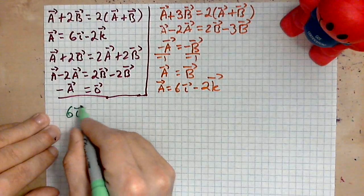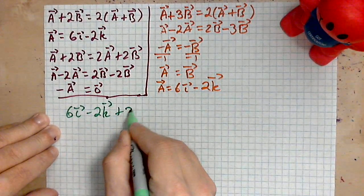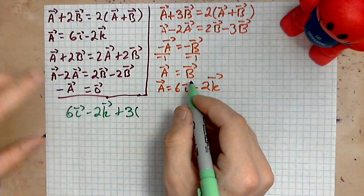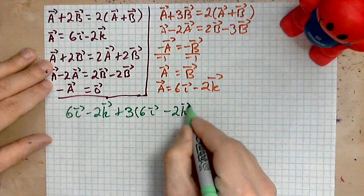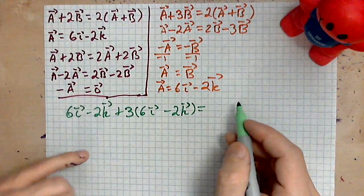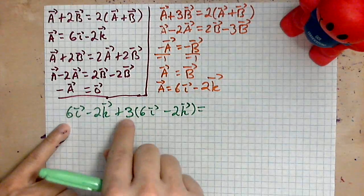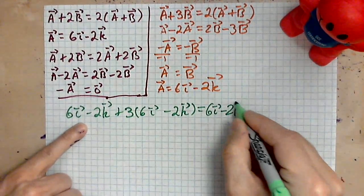I will write 6i minus 2k, and to what I am adding 3 of b, but b is the same as a, so 6i minus 2k. Let's see what comes out on the left side of the equation. We have to use the distributive property on the three, so you have 6i minus 2k.